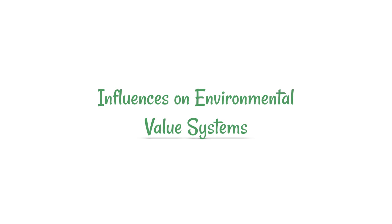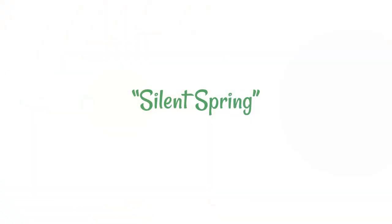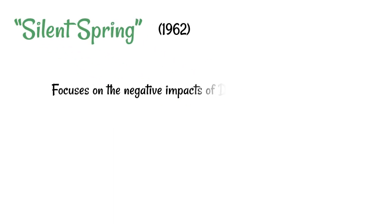A good example of something that had a major influence on how people viewed environmental issues was a book called Silent Spring, written by Rachel Carson. It was published in 1962 and it focused on the negative impacts of the pesticide DDT on birds and insects. Up until this point, DDT had been used widely.